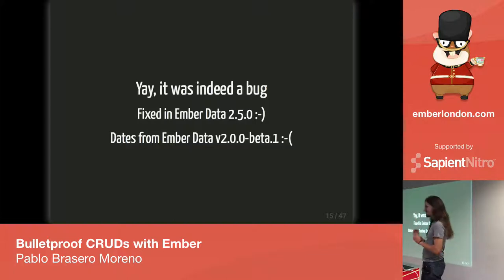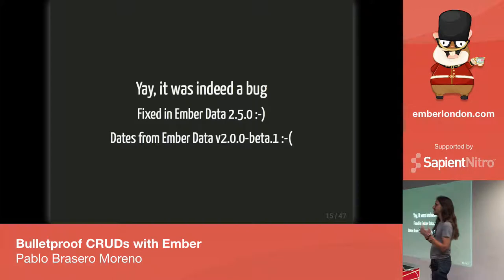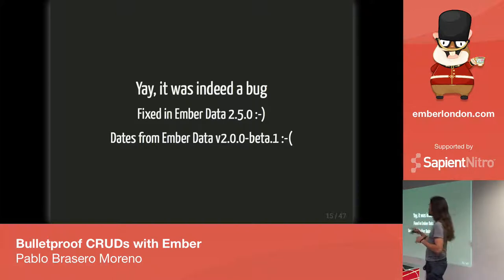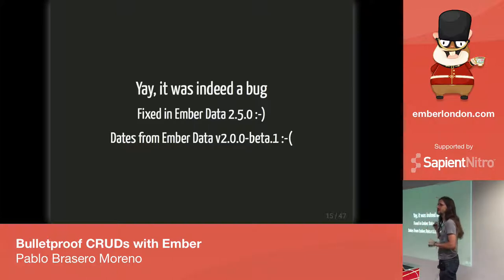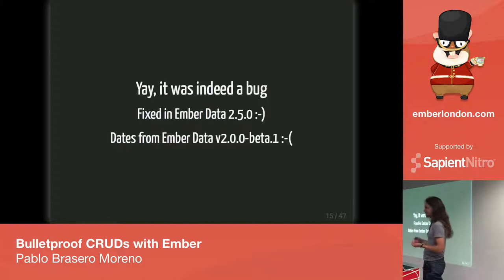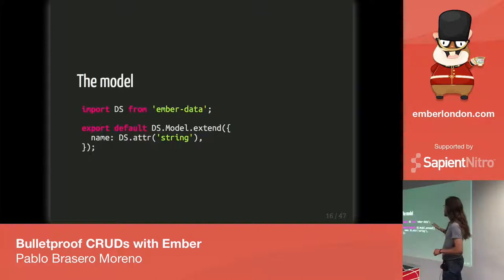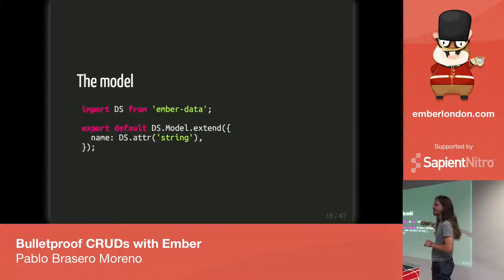I'm not going to go through everything in the application — and I'll give a link to the gist at the end — but I'm going to explain a few other gotchas I found. The application is as simple as possible: it only has one model, and that model only has one attribute, which is a simple string.